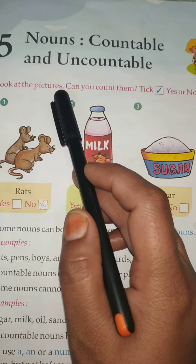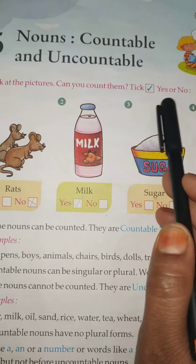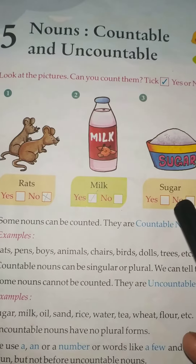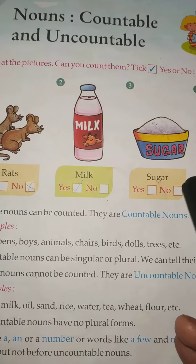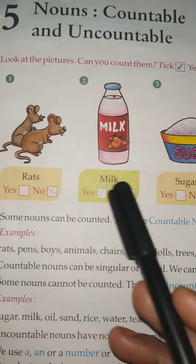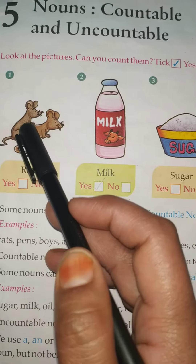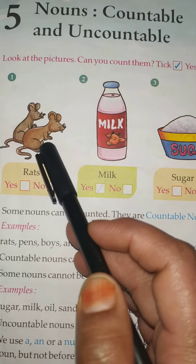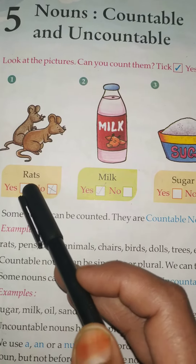Look at the pictures. Can you count them? Take a guess — yes or no. You have some pictures below, students. You have to tell which ones you can count and which ones you cannot count. Red. One, two. How many are there? Two. Can you count them? Yes.